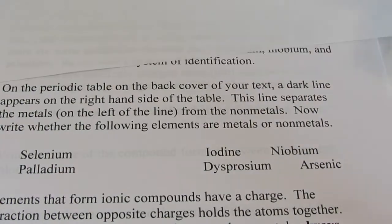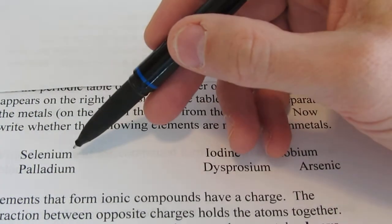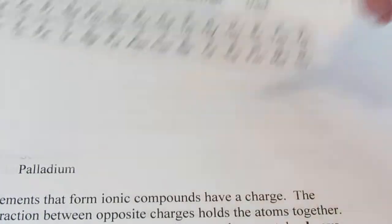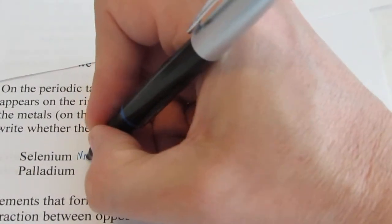So if we take a quick look and try to find these elements, we should be able to figure out if they're metals or non-metals. For instance, let's find the element selenium. There it is, atomic number 34. What would you call that? Good job. I would call it a non-metal also.